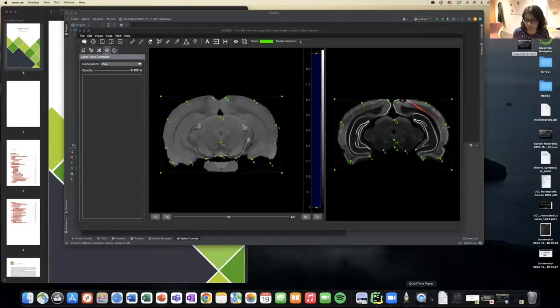Hello. So the software Herbs. Now I need to share my screen. Herbs is this software which previously I showed that you can plan trajectories. Not just that, you can also register your probe tracks, tetrodes, optical fibers, and also viruses, similar to what BrainReg is doing.